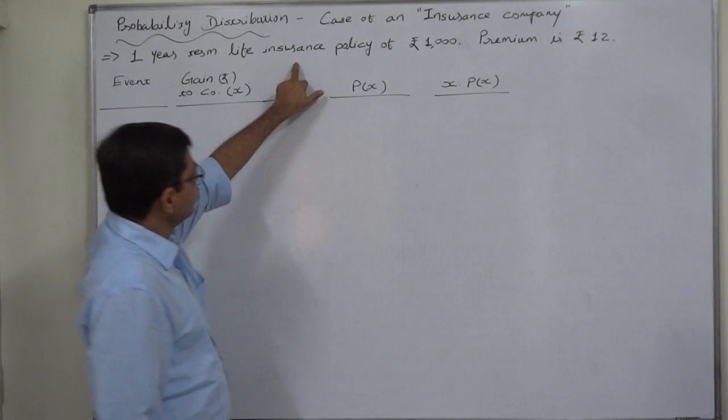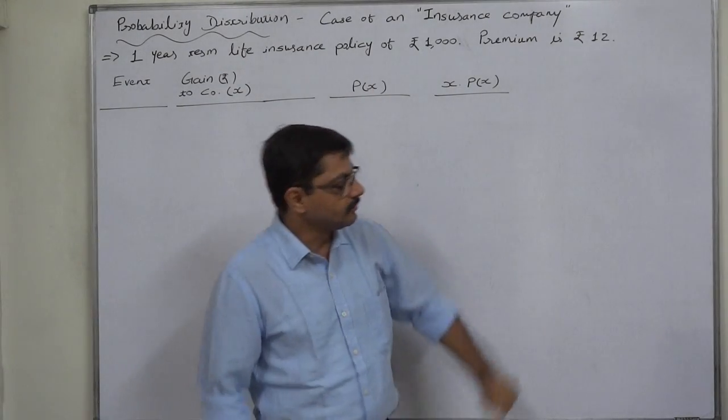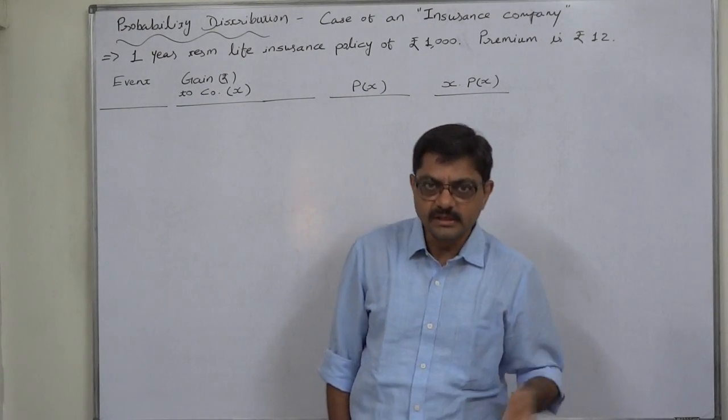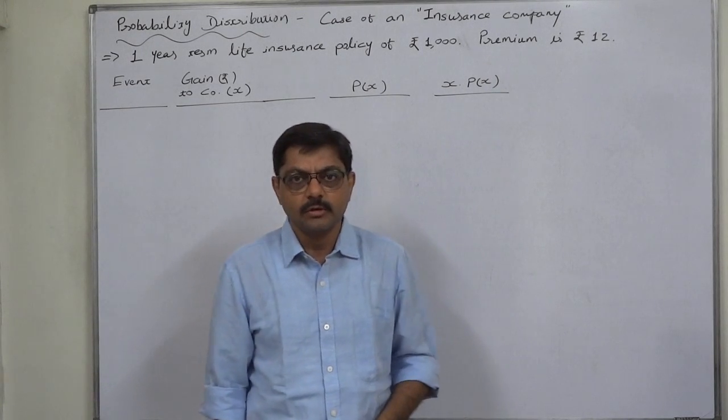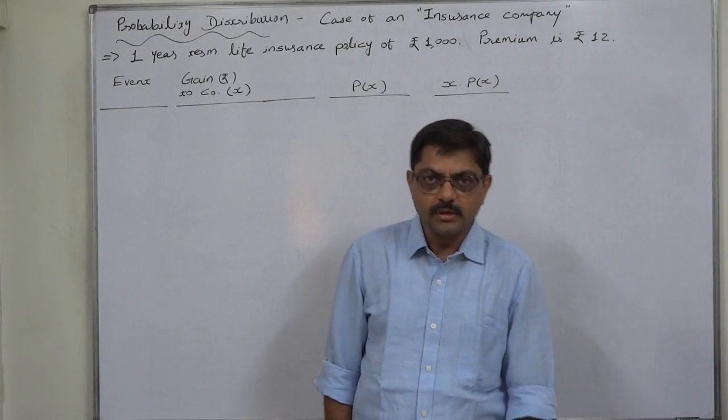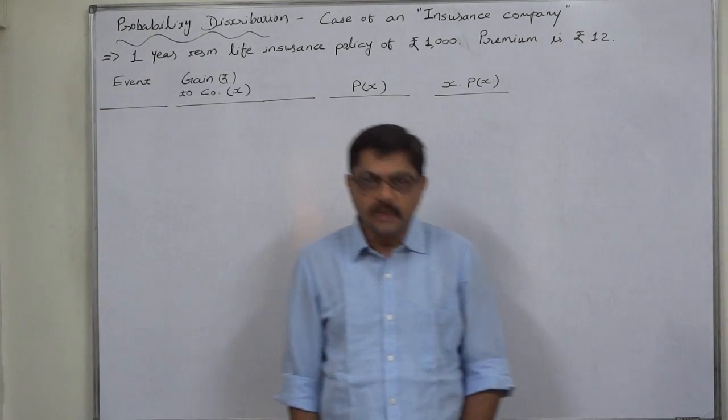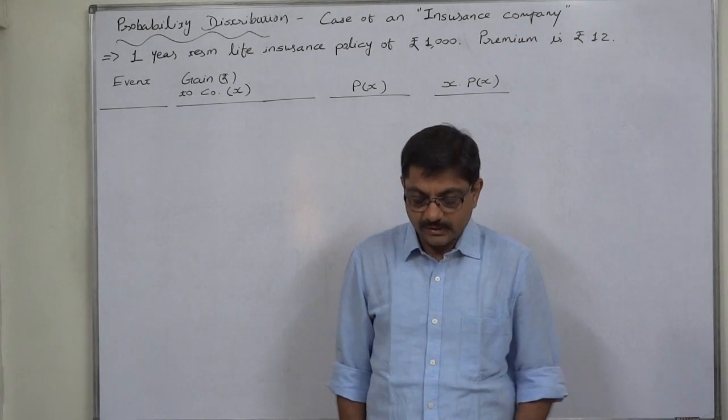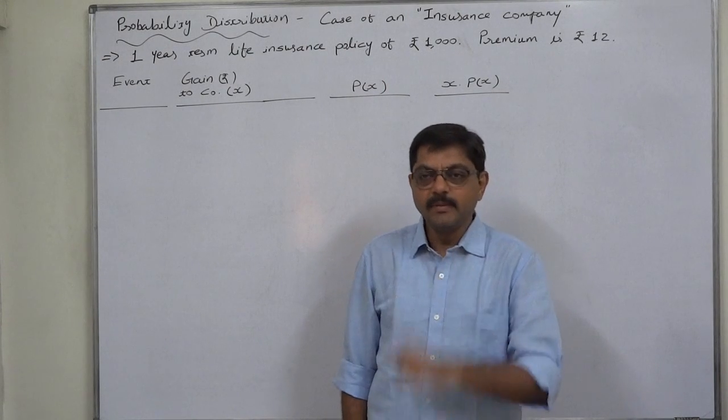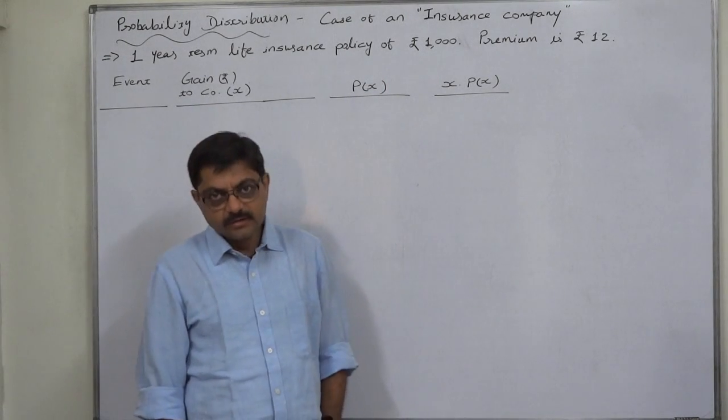A one year term life insurance policy of rupees 1000 means in case of incidence of death of the policyholder or the life assured, the insurance company will pay rupees 1000 to the nominee of the person and the premium for one year is rupees 12.